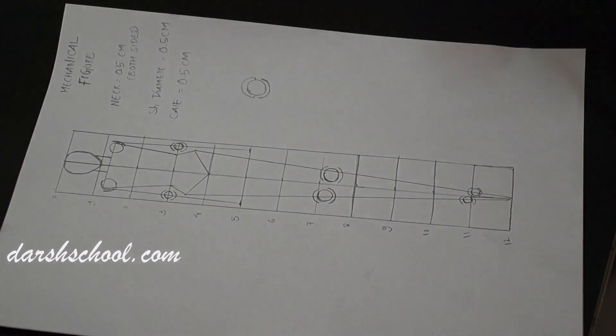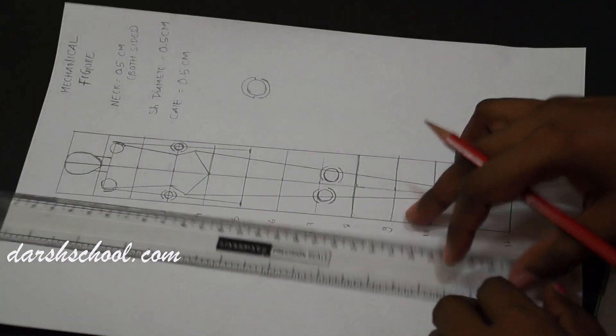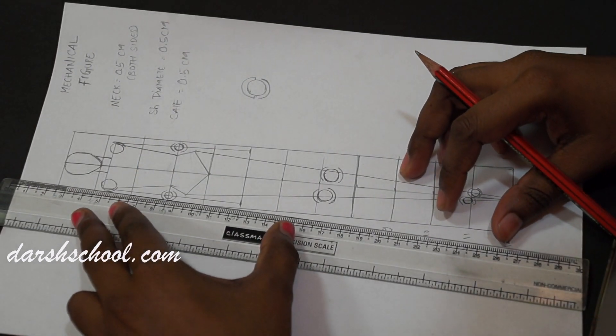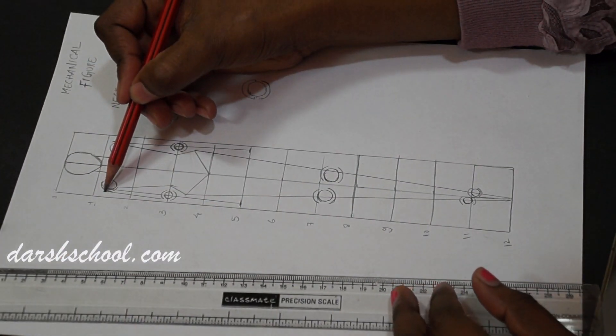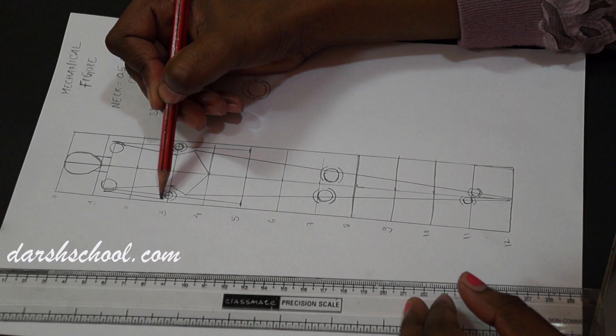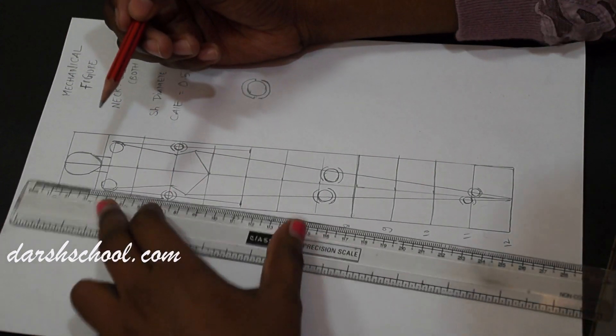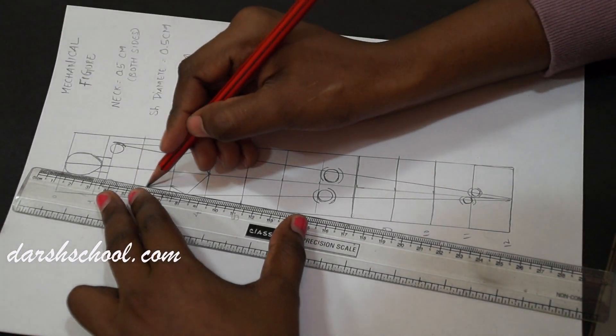So now our arcs are done. Now what we'll do. We'll join all the points. This point to this. You can see. I've joined this point. This arc point to your elbow. So next this also.